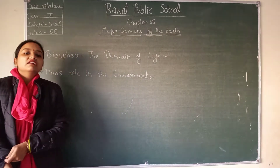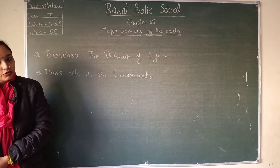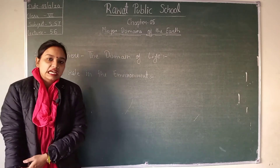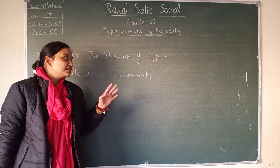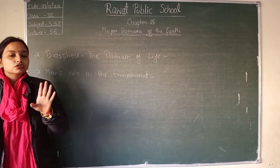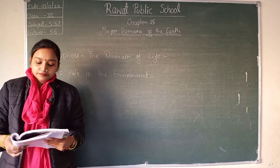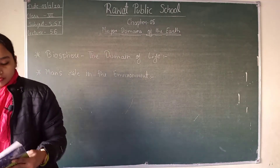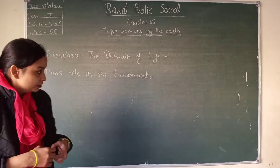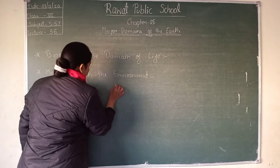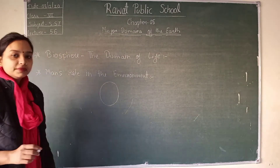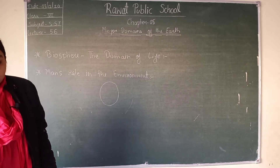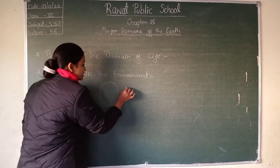In this chapter we have seen that there are four major domains of the Earth. First is Lithosphere, second is Hydrosphere, third is Atmosphere, and the last one is Biosphere. So what is the definition of Biosphere? The zone where all living organisms on Earth are found is called the Biosphere.